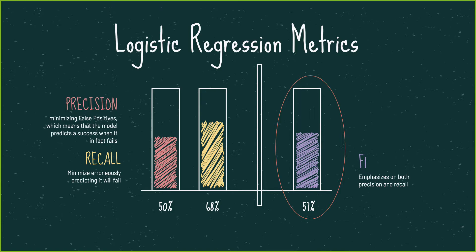Recall is important for the Kickstarter platform to accurately determine which campaigns to promote in their algorithm. Since both precision and recall are important, I chose F1 score.